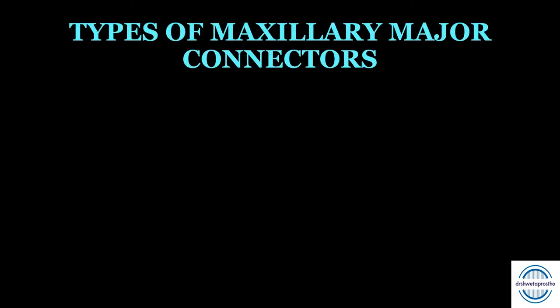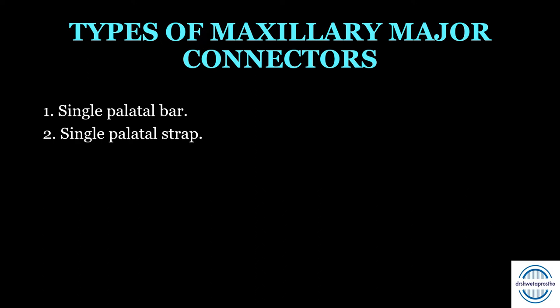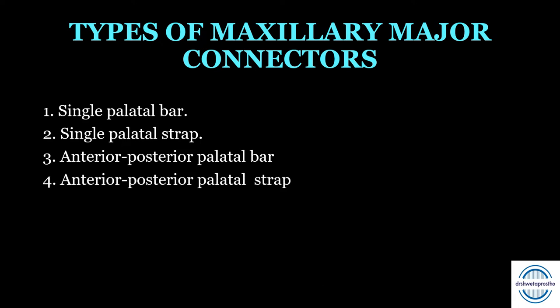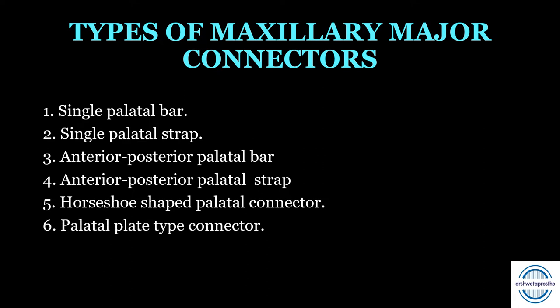Now we come to the types of maxillary major connectors. The classification is mainly based on palatal coverage, and on this basis six types exist: first, the single palatal bar; second, single palatal strap; third, the anterior-posterior palatal bar; fourth, anterior-posterior palatal strap; fifth, horseshoe-shaped palatal connector; and sixth, palatal plate type connector. Let us discuss them one by one.